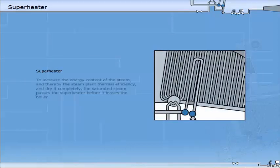To increase the energy content of the steam and thereby the steam plant thermal efficiency and dry it completely, the saturated steam passes the superheater before it leaves the boiler.